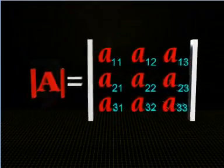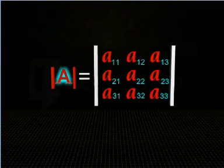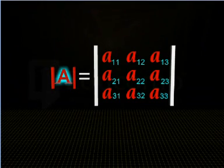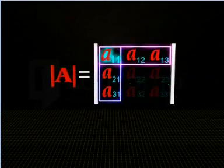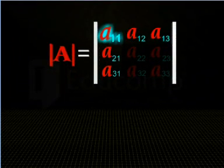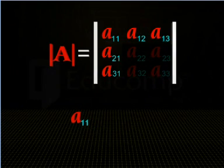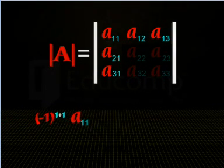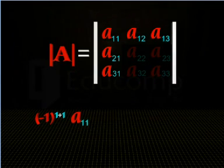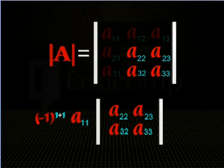For this, consider the determinant of square matrix A of order 3. To expand this determinant along the first row, first multiply the first element of the first row, that is A11, by minus 1 raised to the power sum of suffixes in A11, and then multiply the product with a second order determinant.